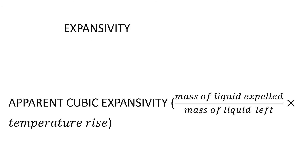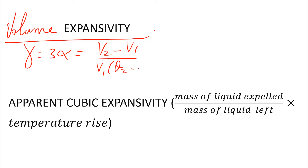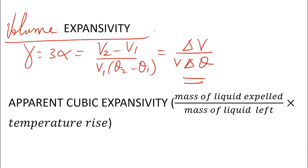Then we have volume or cubic expansivity. The cubic expansivity is given as gamma, which equals 3 alpha. That gives you (V2 − V1) over the original volume times change in temperature, which is the same as change in volume over volume times change in temperature. Whether it is linear, area, or volume, the unit is per Kelvin or per degrees Celsius. So the superficial expansivity is 2 alpha, while the cubic is 3 alpha.